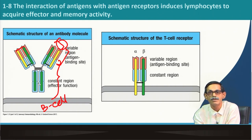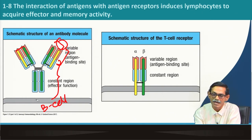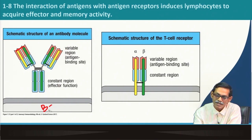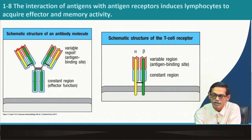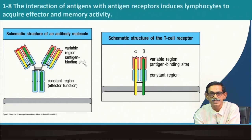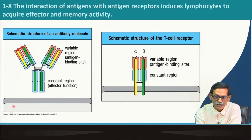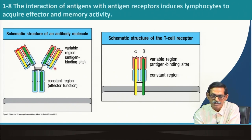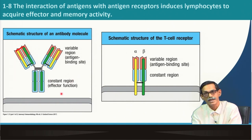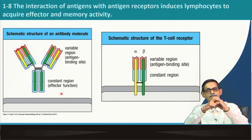This molecule is now a free or secreted molecule — the same receptor molecule produced without the transmembrane domain that anchored it to the cell. It is released into the blood and serves as an antibody. This antibody has two distinct domains: the variable region responsible for antigen binding, and the constant region responsible for effector functions — what to do after the antibody has attached to the antigen.